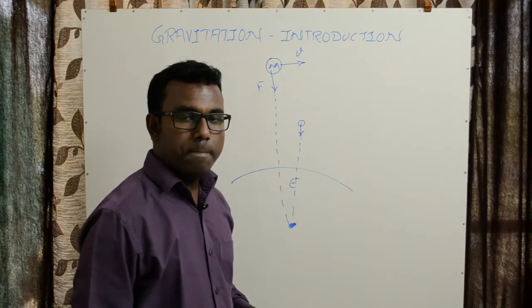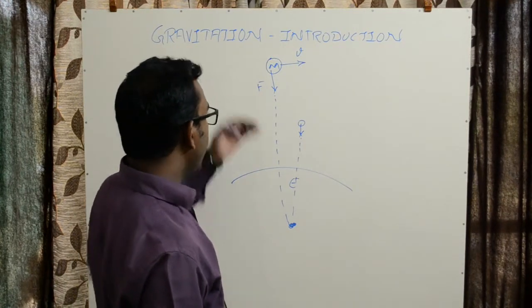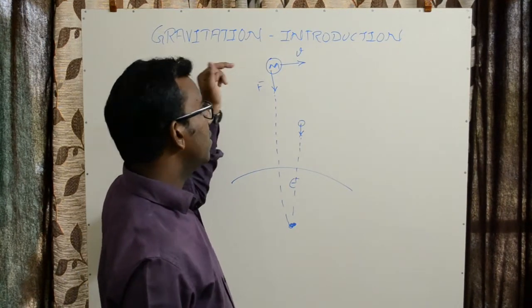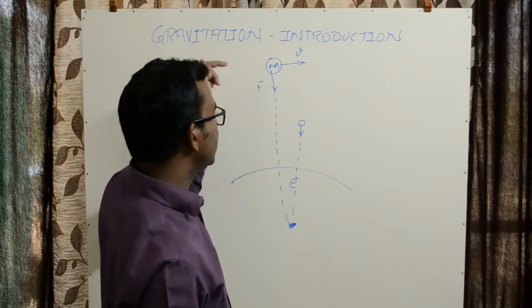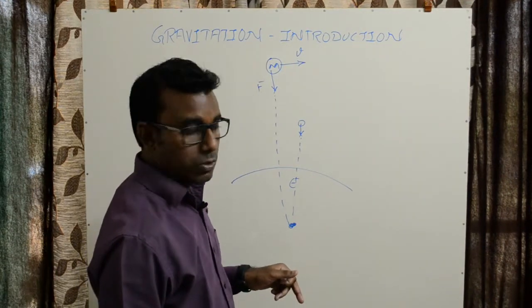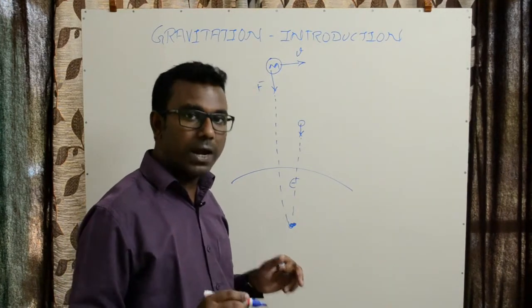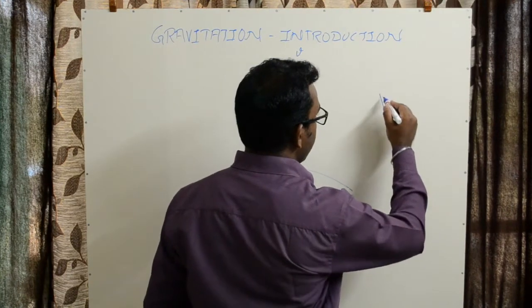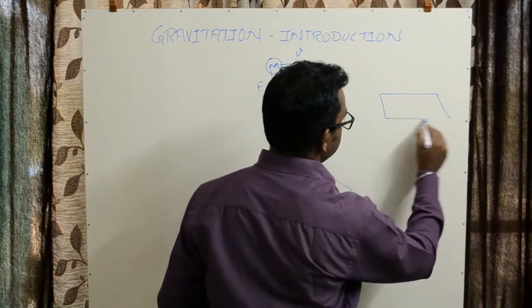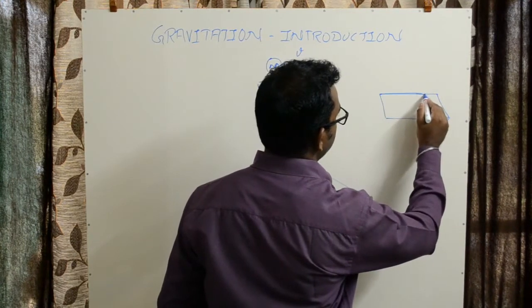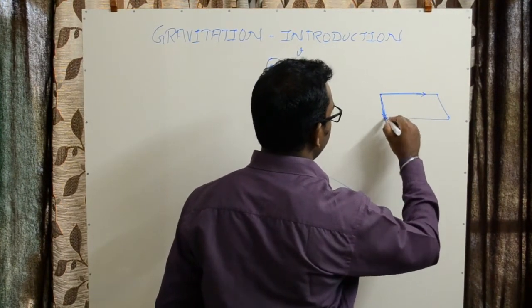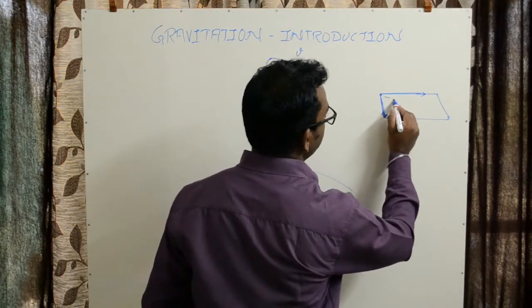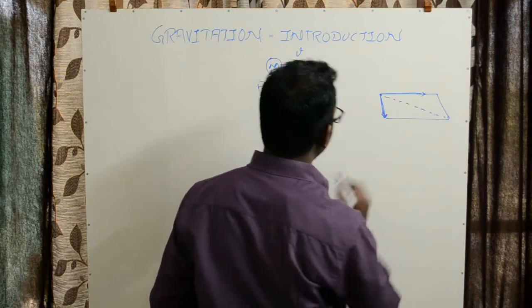Now what happens is, why is this not falling downward? It's because it has another vector applied on it. If you guys know the law of parallelogram, it says that if you have a parallelogram like this and two vectors along the adjacent sides, the resultant vector will be along the diagonal of this parallelogram. The same principle will be applied here.